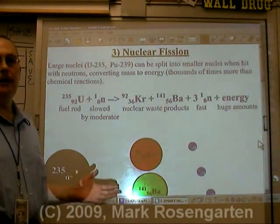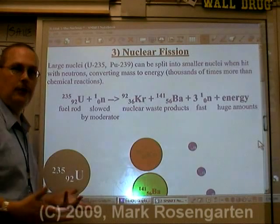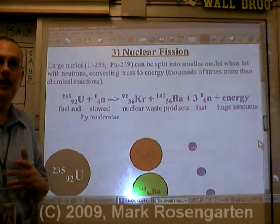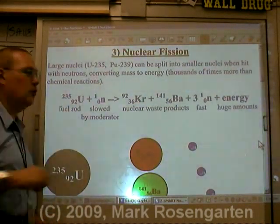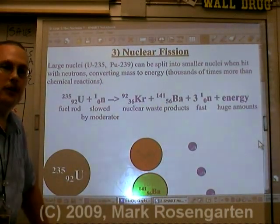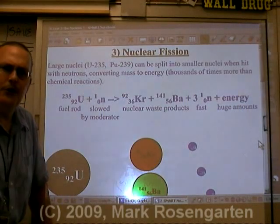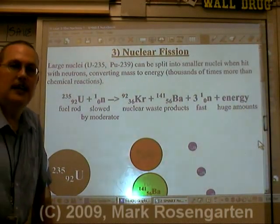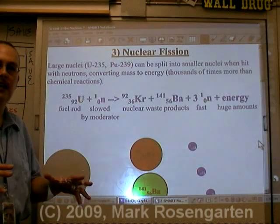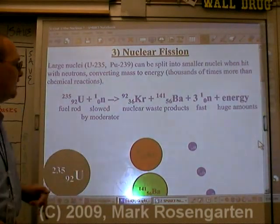Now, most uranium is uranium-238. You have to enrich the fuel in order to get rid of some of that uranium-238 and have a high enough concentration of uranium-235 to undergo fission. You need a minimum of 3% uranium-235 in order for fission to take place. It's called the critical mass — the minimum amount you need to sustain a chain reaction.